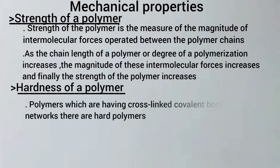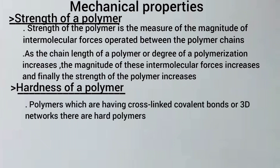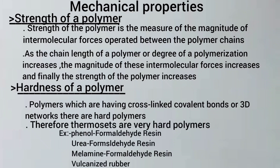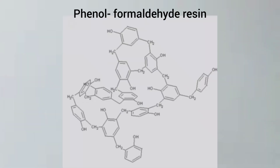Hardness of the polymer: polymers which have cross-linked covalent bonds or a 3D network are hard polymers. Therefore, thermosets are very hard. Examples include phenol formaldehyde resin, urea formaldehyde resin, melamine formaldehyde resin, and vulcanized rubber.